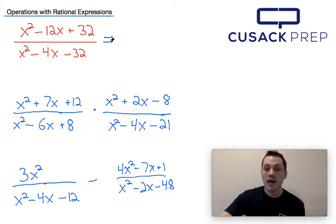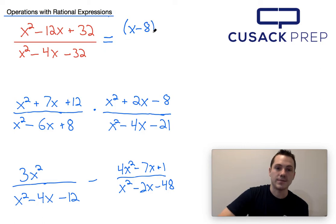So I know how to factor this. I need two numbers that multiply to 32 but add to negative 12. I know that negative 8 and negative 4 would satisfy that. So I know that this numerator can factor into (x - 8)(x - 4).